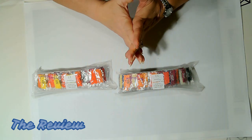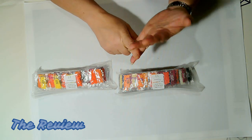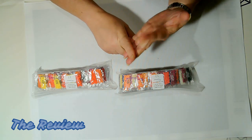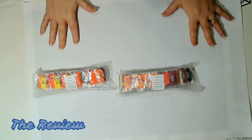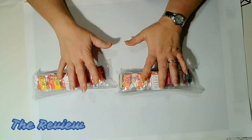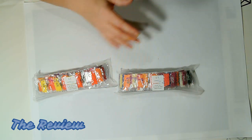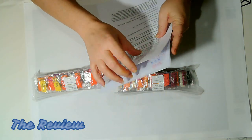So most diamond paintings always include three items: your canvas, your drills, and your toolkit. So we know we've got the toolkit, obviously we have the canvas. So now we're going to check the drills, make sure they're all here. That's what this inventory sheet is for.